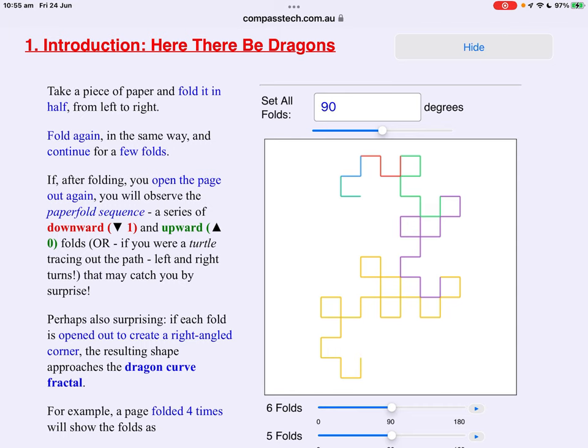What's become most publicly interesting perhaps is that if you open the page out and set each fold to 90 degrees, then the shape that emerges has been called the dragon curve or the dragon curve fractal.